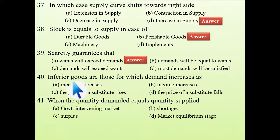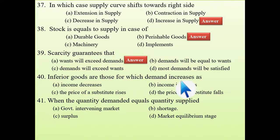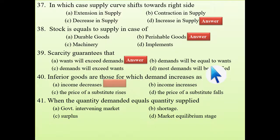Next: inferior goods are those goods for which demand increases as — inferior goods are related to the determinant of income. In the case of inferior goods, demand increases as income decreases. Always focus on the determinant of income for inferior goods.